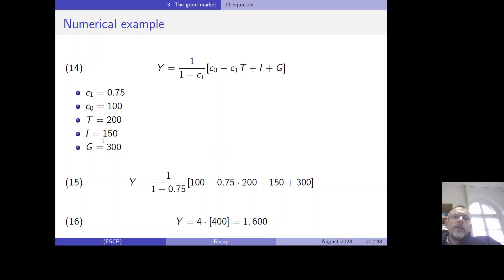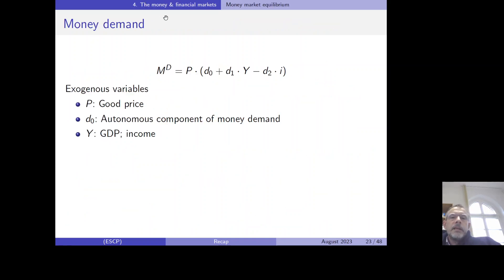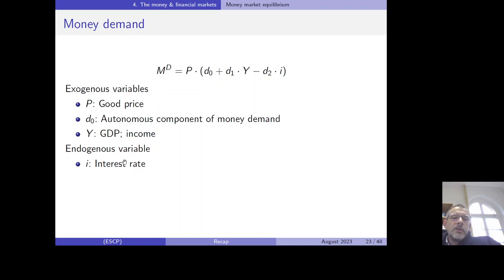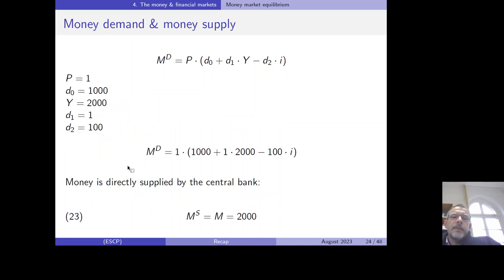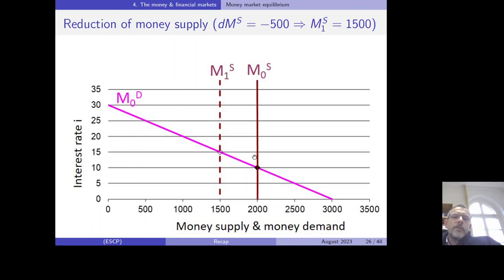The interest rate is introduced in Chapter 4, where we discuss money and financial markets and examine the relationship between money demand and money supply. The interest rate becomes an endogenous variable, determined at the intersection of the money supply and money demand curves. For example, the equilibrium interest rate might be 10%. When the central bank performs a contractionary monetary policy, money supply decreases and the interest rate increases.